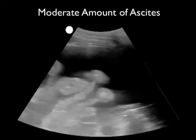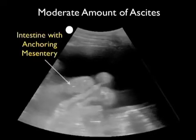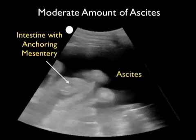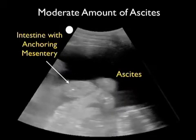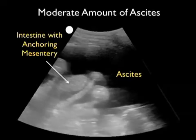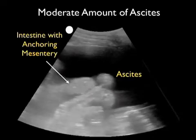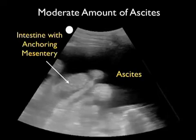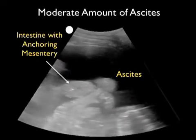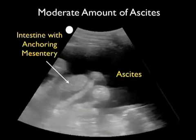This video shows a moderate amount of ascites, again taken with a 3 MHz probe. We note the intestine with anchoring mesentery sliding back and forth as the patient breathes, and we see a large collection of ascites — that dark or anechoic fluid collection — anterior to the intestine. This might be a good location to perform a paracentesis, as we could place the needle safely into the ascites without going through the intestine or anchoring mesentery.